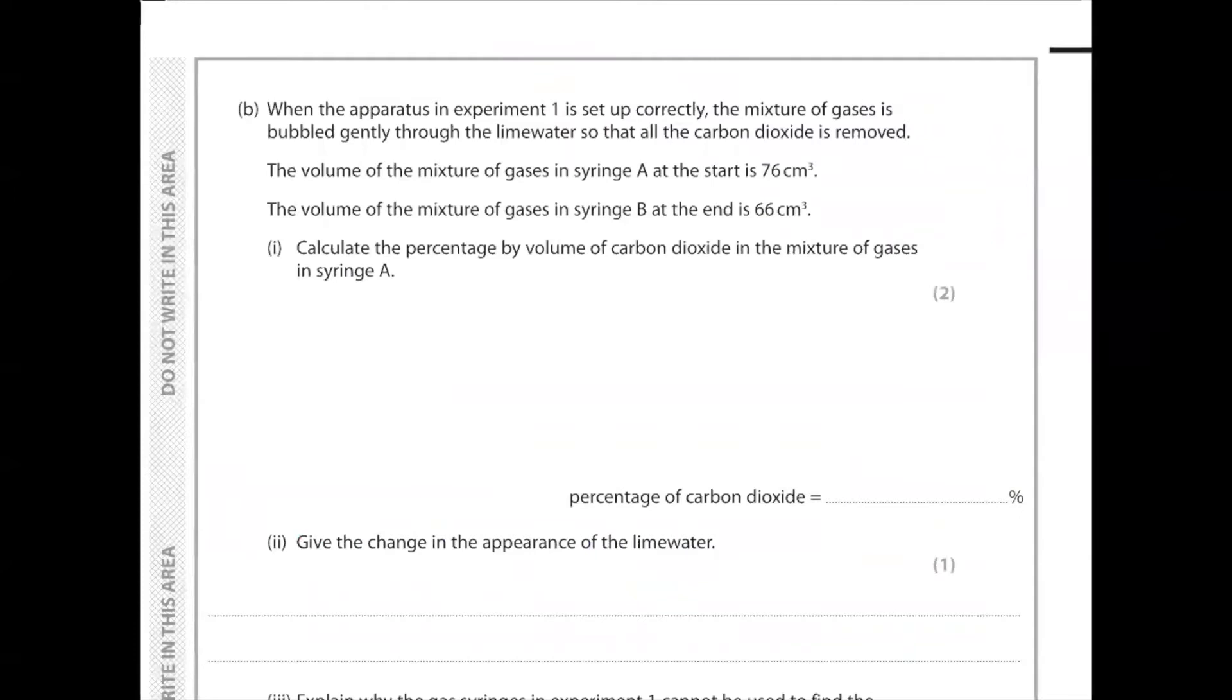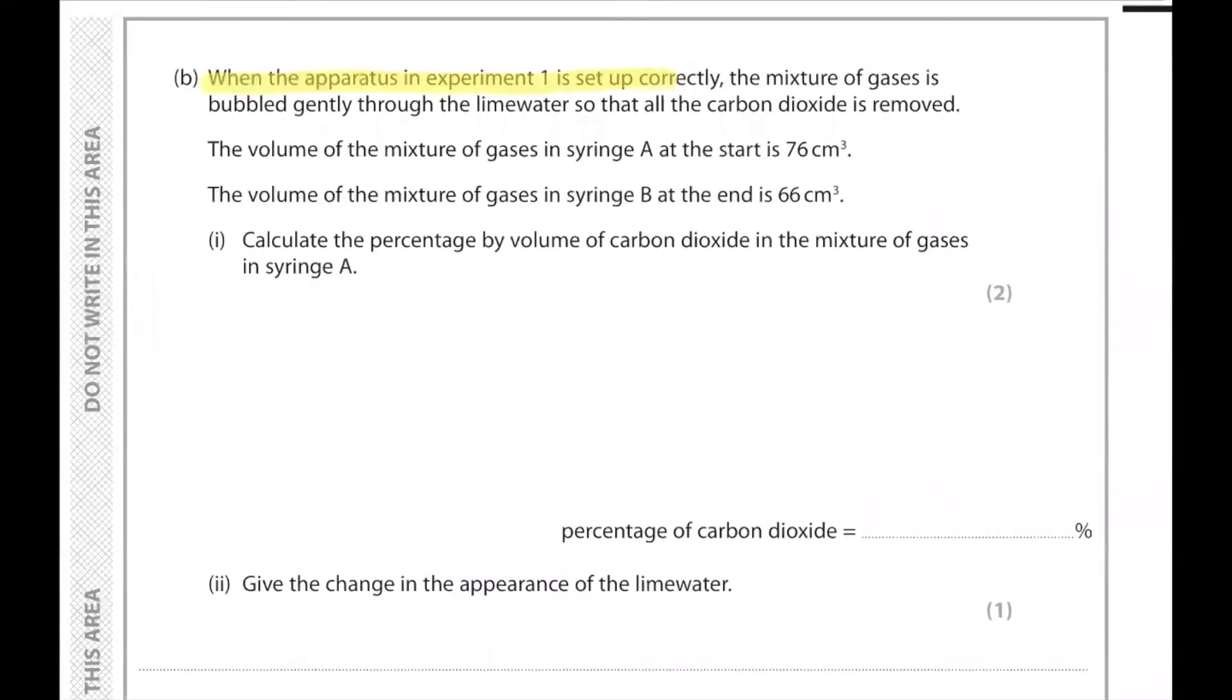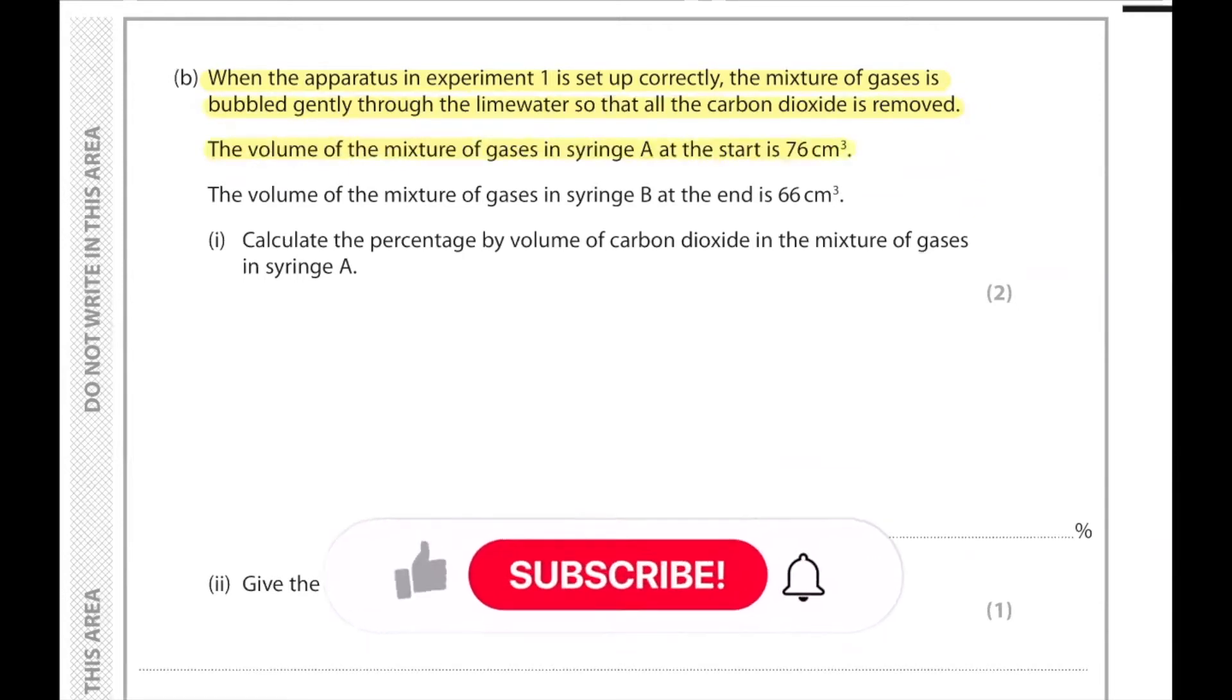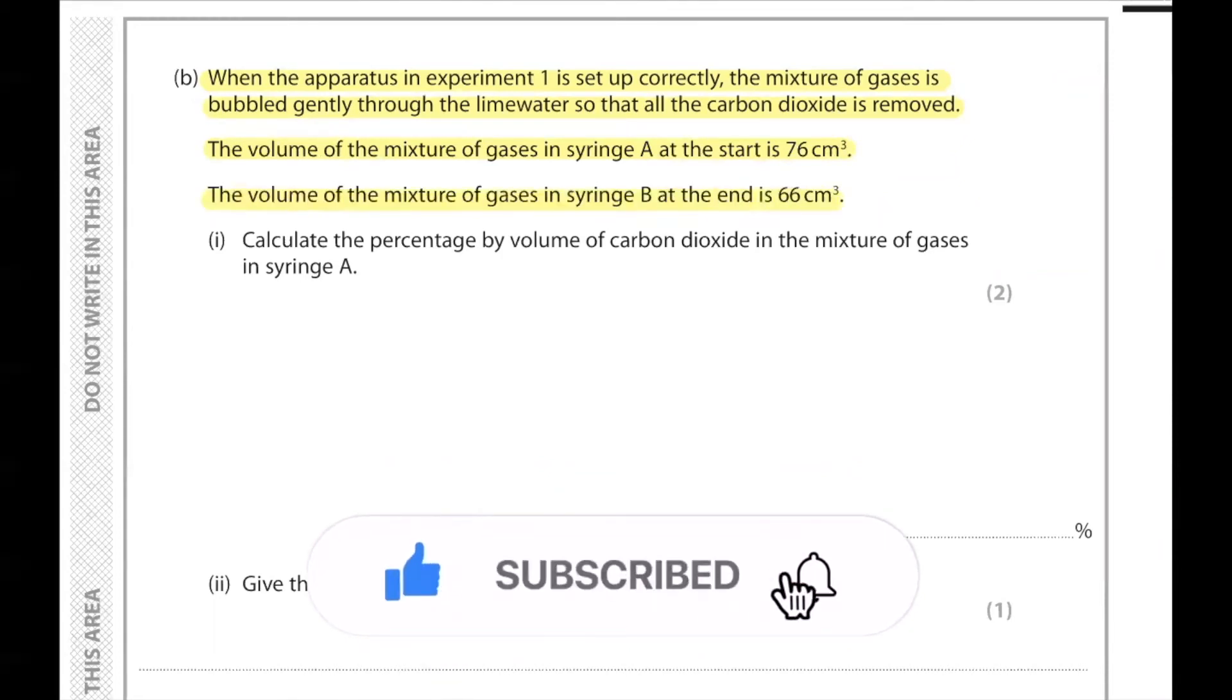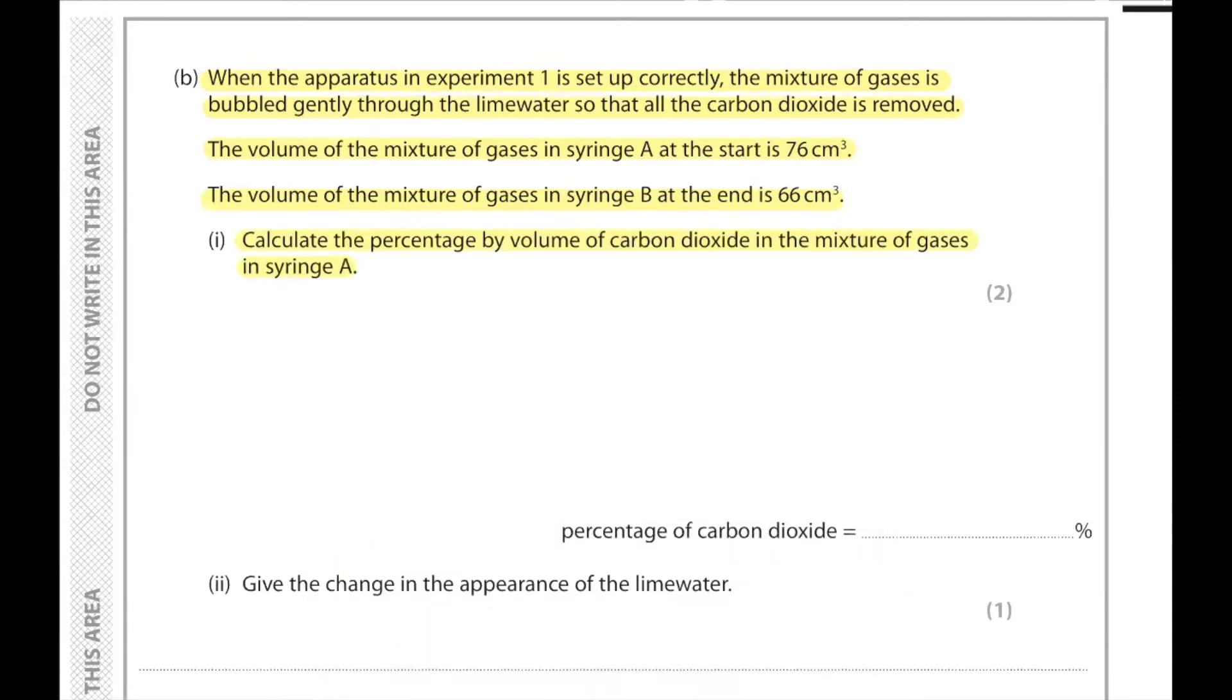Part B. When the apparatus in experiment 1 is set up correctly, the mixture of gases is bubbled gently through the lime water so that all the carbon dioxide is removed. The volume of mixture of gases in syringe A at the start is 76 cm³. The volume of gases in syringe B at the end is 66 cm³. Calculate the percentage by volume of carbon dioxide in the mixture.